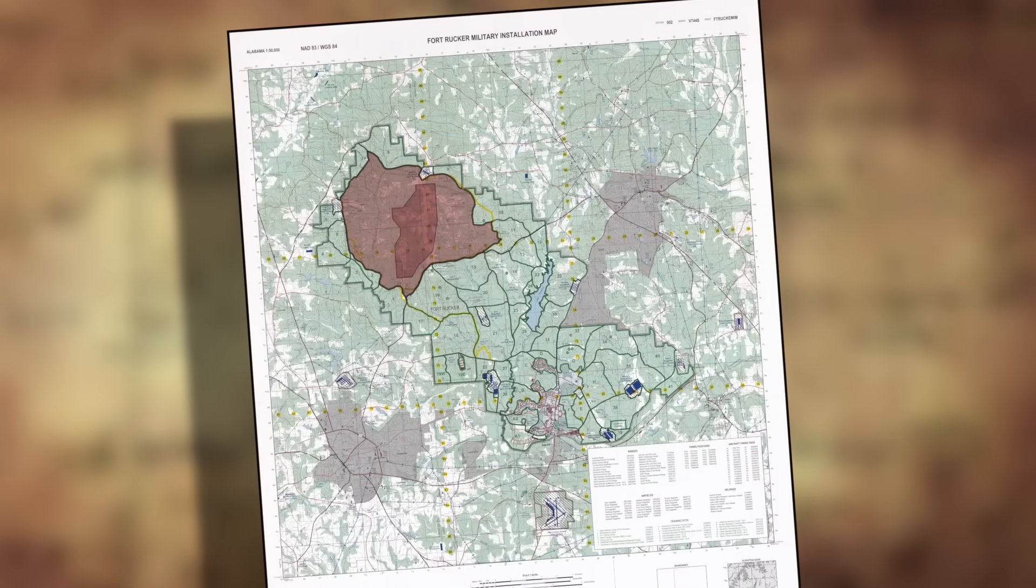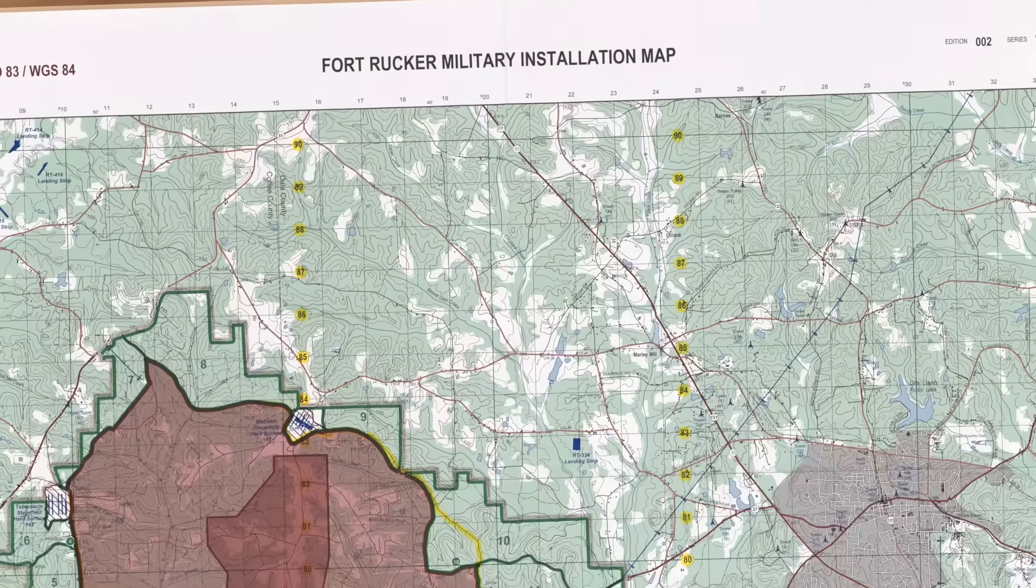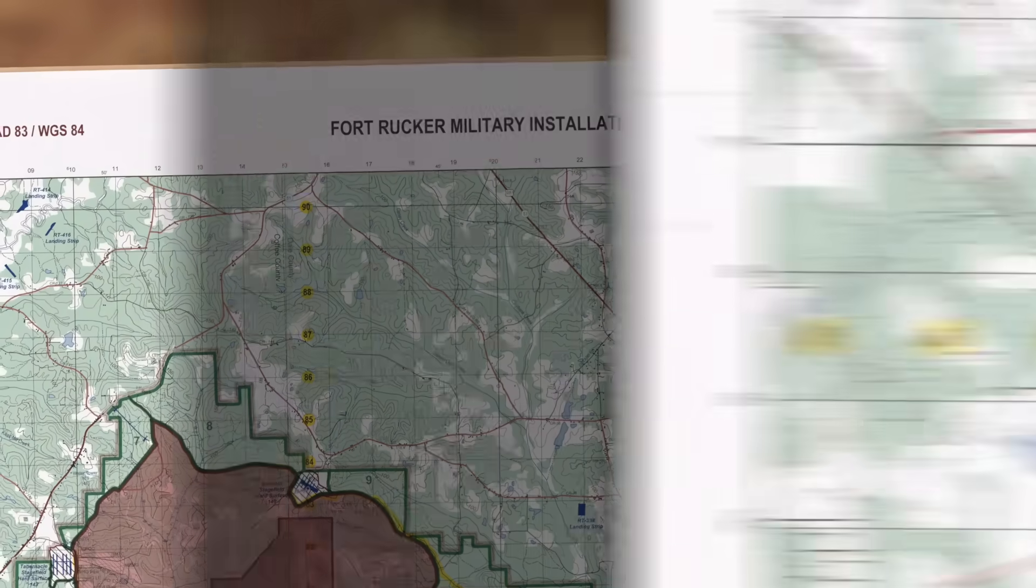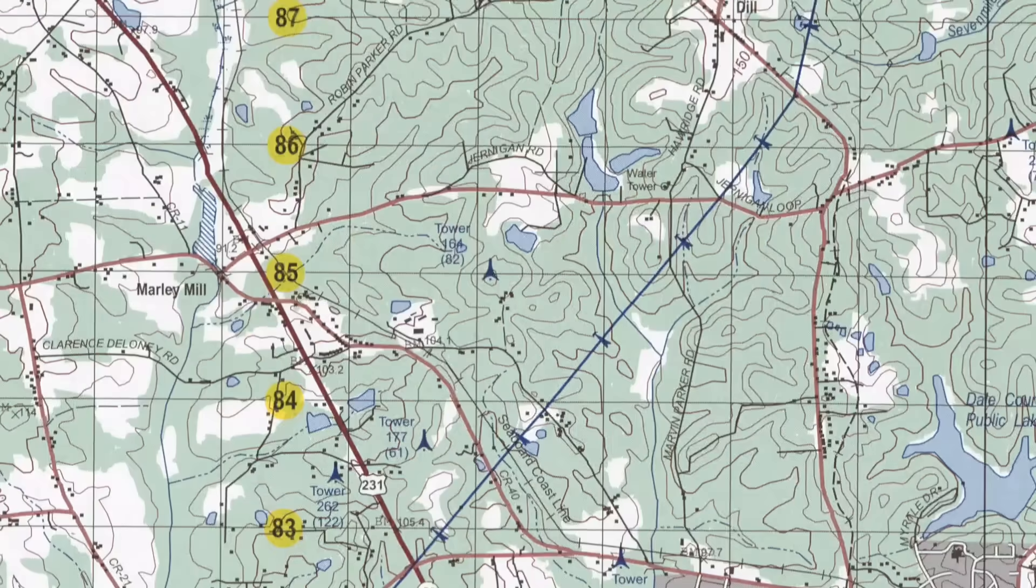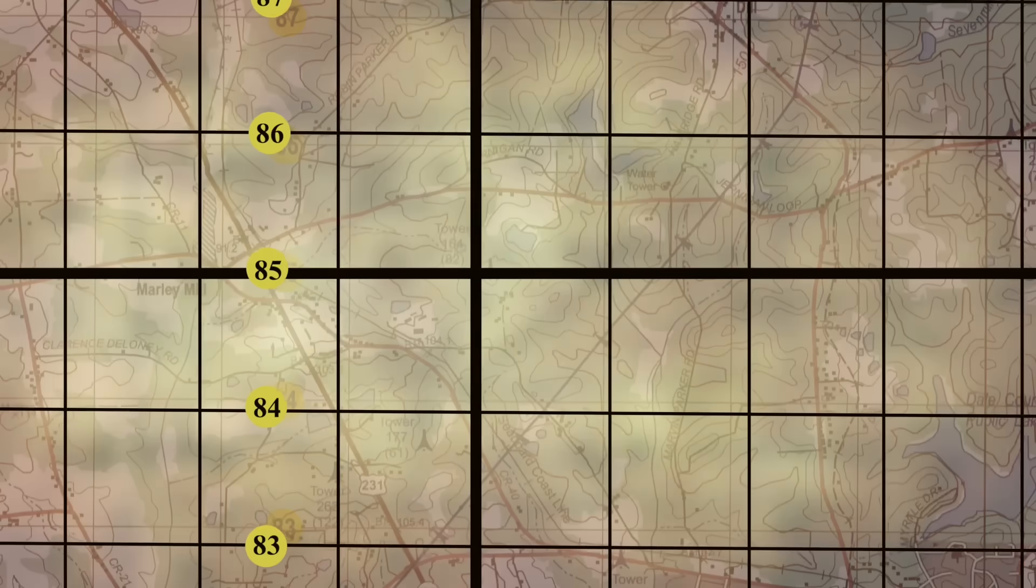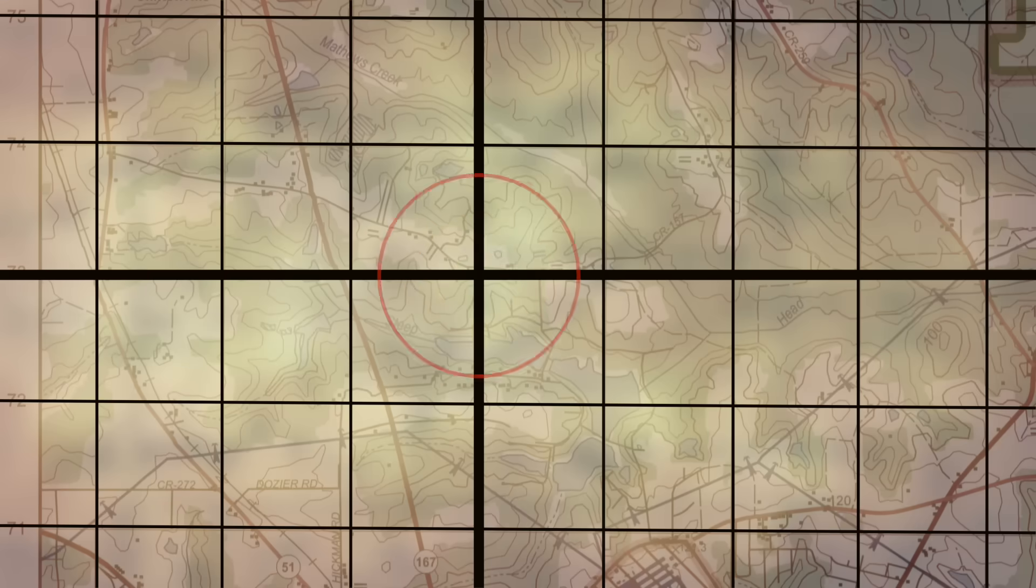This is a military-grade topographical map of Fort Rucker in Alabama. The lines and grids covering it are a coordinate system that allows for the precise distinguishing and pinpointing of different locations across the map.